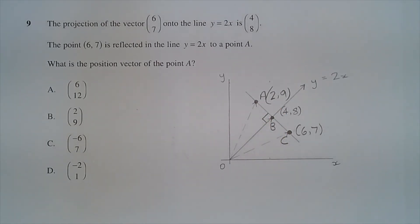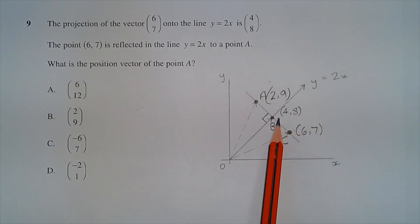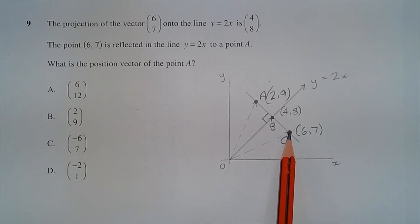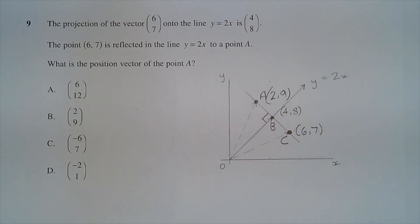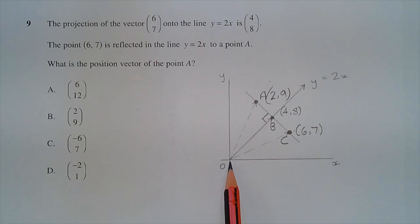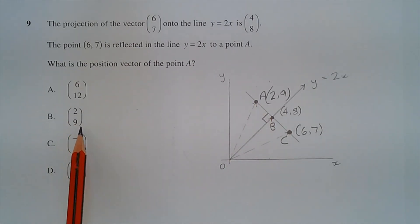Looking at it from the vertical direction, the vertical distance from point C to point B is 1 unit — from 7 to 8 — which means the vertical distance from point B to point A is also 1 unit. Adding 1 to 8 equals 9. So the coordinates of point A are 2 comma 9, meaning the vector joining the origin to point A is 2i plus 9j. Therefore the answer is option B.